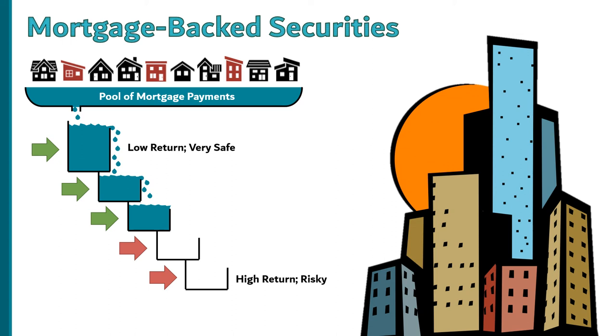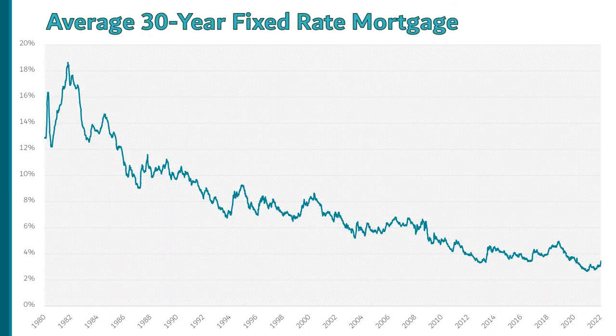Mortgage rates could be driven down to historically low levels — essentially, the risk that comes with making any loan could be efficiently distributed amongst those most willing to take that risk. The result was spectacular for American home buyers. In the early 1980s, interest rates were over 15 percent. Our $270,000 mortgage at six percent had a monthly payment of about $1,619, but the same mortgage at 15 percent would have a monthly payment of $3,414.